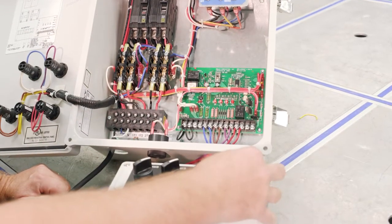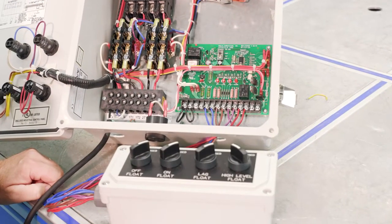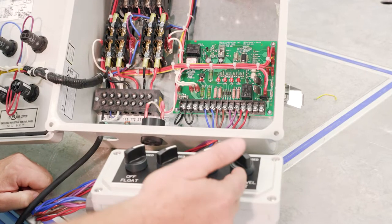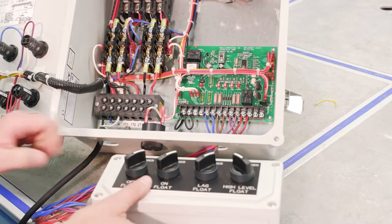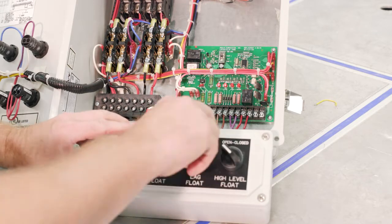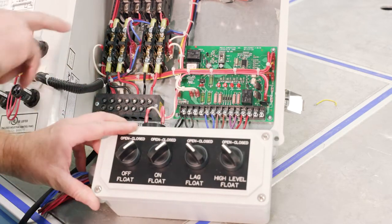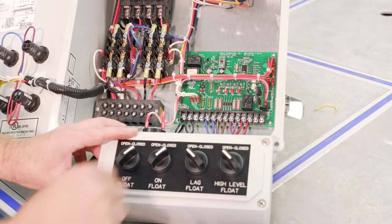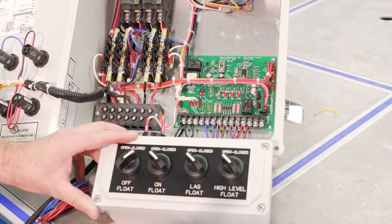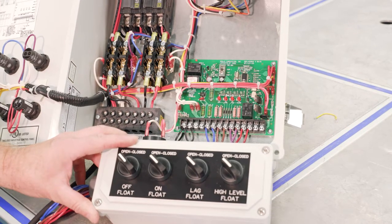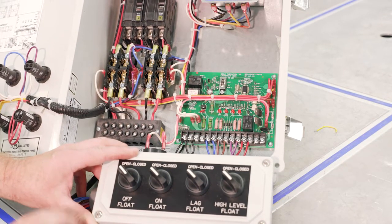Okay, so now I got everything on, again so we're going to go backwards now, that high level opens up, the lag float opens up, still have both pumps running, the on float, both pumps are still on, and then they won't turn off until it gets to the off float.